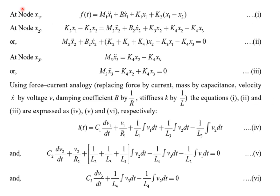At node x1, the applied force f(t) = M1·d²x1/dt² + B·dx1/dt + K1·x1 + K2(x1 − x2). At node x2: K2·x2 = M2·d²x2/dt² + B2·dx2/dt + K3·x2 + K4(x2 − x3). The third equation similarly balances forces at node x3.